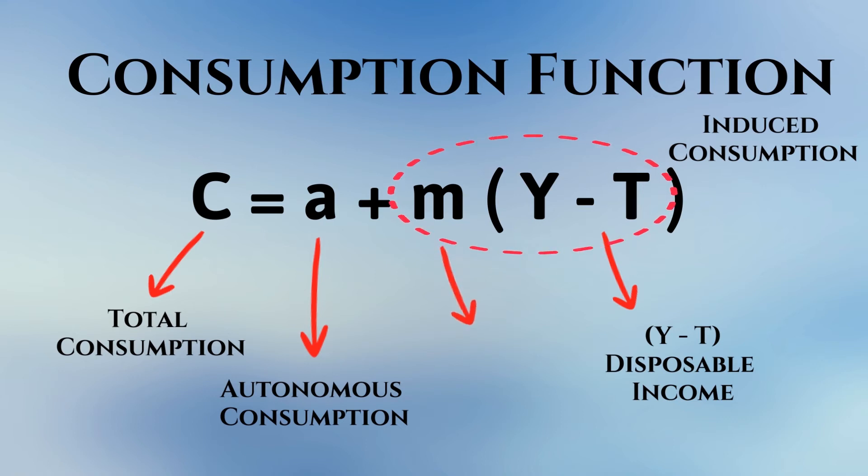M is technically called the marginal propensity to consume or MPC. It represents the change in consumption when income changes.